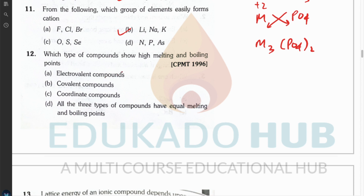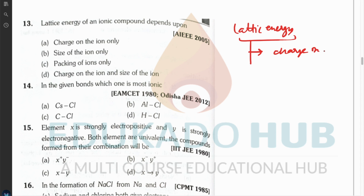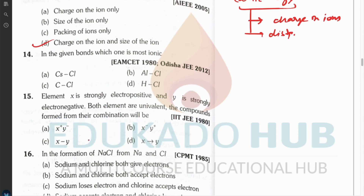Question twelve: which type of compound shows high melting as well as boiling points? The answer is ionic compounds. Question thirteen: lattice energy of an ionic compound depends on charge on ions and distance. The greater the charge and the lesser the distance, the greater the lattice energy. You also need to consider packing and size.